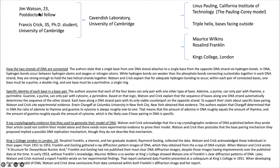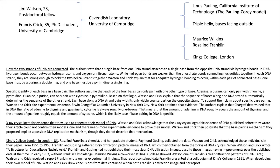Jim Watson was 23 years of age — not far from your age — had already done his PhD, was from the United States, and had come to Cambridge to study in the Cavendish Laboratory. Francis Crick, at 35 years of age, was still a PhD student at the University of Cambridge. They were 10 years apart, met when Watson came to Cambridge, started eating lunch together, became friends, and began taking interest in the potential structure of DNA. Neither of them actually did any serious experimental work themselves.